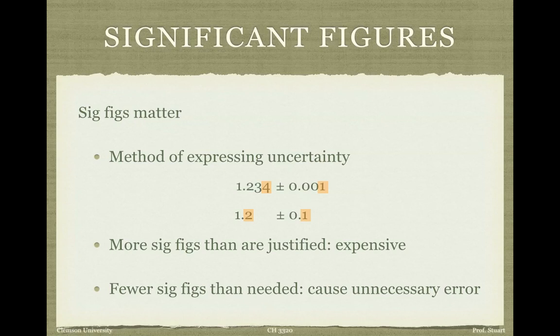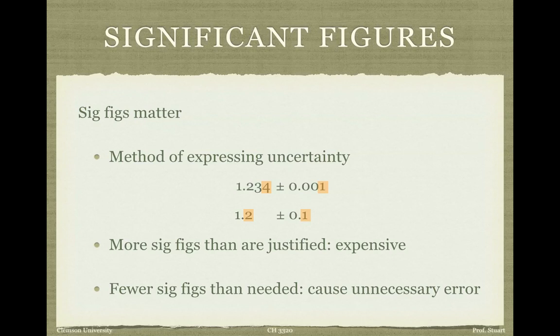We need to care about sig figs, especially in experimental or real-world cases, because giving more sig figs than are justified can have expensive consequences. For example, if you need to weigh out a chemical and you quote the weight to a tenth of a gram, an ordinary kitchen scale works fine. But if you need accuracy to the tenth of a milligram, you'll need an expensive analytical balance. Similarly, if you need a part machined to a thousandth of an inch tolerance, that requires much more expensive equipment.